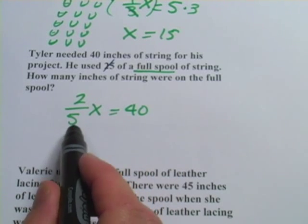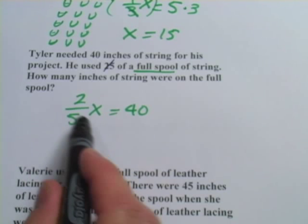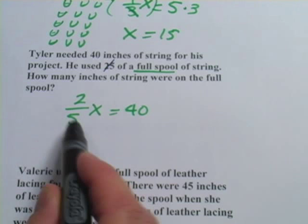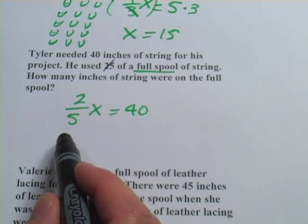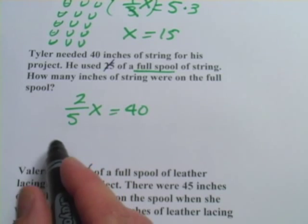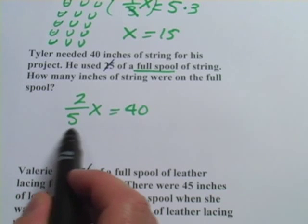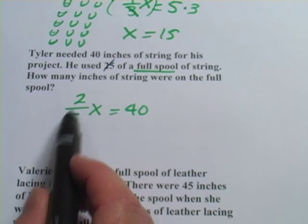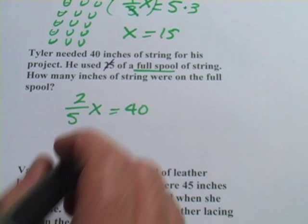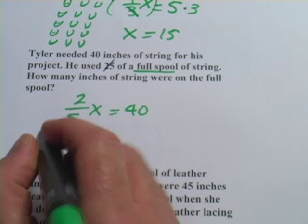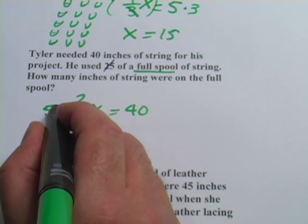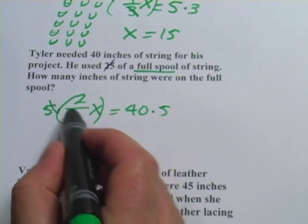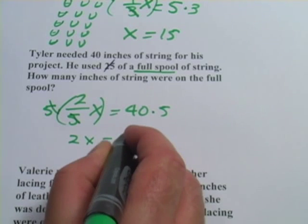Now, we want to get X alone and we have to undo this being multiplied by two-fifths. When I work with fractions in algebra like this, I like to do them in a two-step way. It makes a little more sense to me. I get rid of the bottom number by multiplying by something, and then I get rid of the top number by dividing by something. You could think of it like this. Let's multiply both sides by five first. And those fives will cancel. And then I would have 2X equals 200.